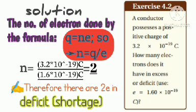Using quantization of electron: q equals n times e, where n is the number of electrons. The formula derives to n equals q over e.